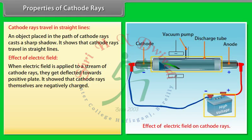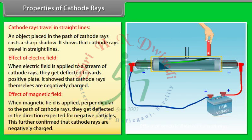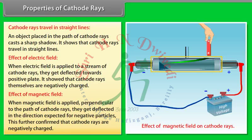Effect of magnetic field: When a magnetic field is applied perpendicular to the path of the cathode rays, they get deflected in the direction expected for negative particles. This further confirmed that cathode rays are negatively charged.